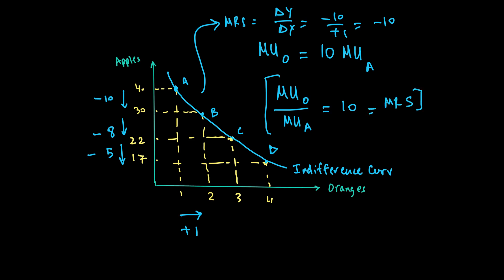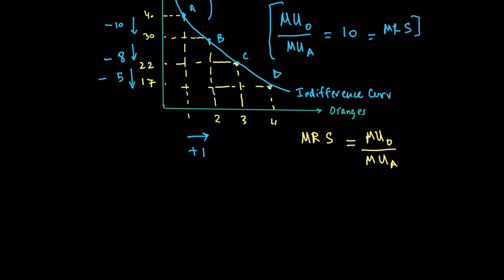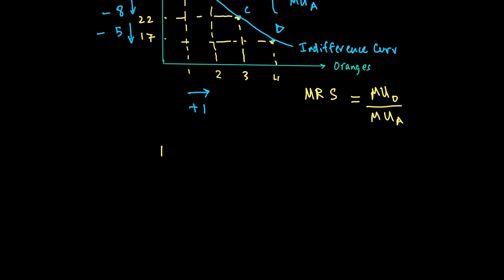In other words, we have found a general form for the marginal rate of substitution in terms of utility: MU of oranges over MU of apples. Writing this in general form, since oranges are on the x-axis and apples are on the y-axis, the marginal rate of substitution — or the slope of the indifference curve — is simply MU of X over MU of Y.